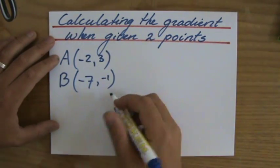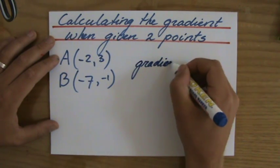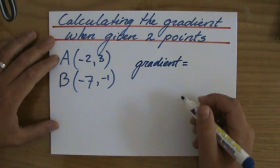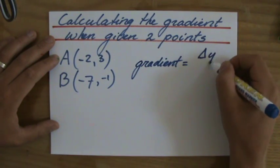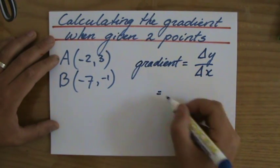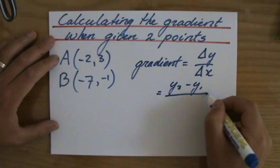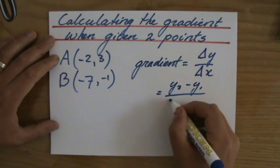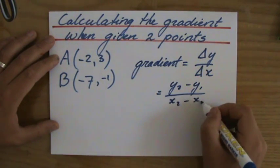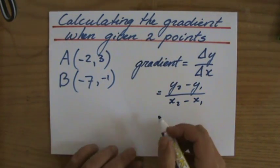The gradient, boys and girls, that is the difference in the y direction over the difference in the x direction. And I always write down delta y, a Greek symbol, delta y delta x. But your book might say y2 minus y1, the difference of those two y coordinates over x2 minus x1. And I explain all of that in other videos.